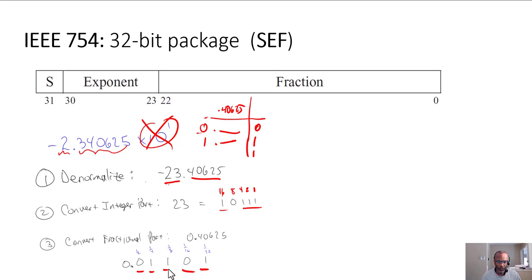So this 0.01101, this is not a decimal point, it's a binary point. If you evaluate this, it's one quarter plus one eighth plus one 32nd, and you'll see that it's 0.40625.